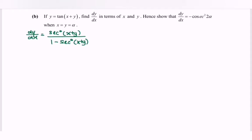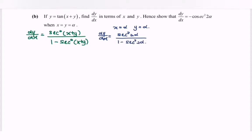Now we show that dy/dx equals negative cosecant²(2α) when x and y both equal α. Substituting, dy/dx equals sec²(2α) over (1 minus sec²(2α)). Using the trigonometric ratio, sec equals 1 over cos, so we rewrite as (1 over cos²(2α)) over (1 minus 1 over cos²(2α)).